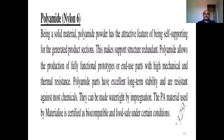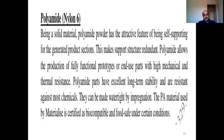The first one is polyamide, also called nylon 6, which basically consists of the amide group in its chemical structure. Polyamide in powder form has the attractive feature of being self-supporting for a generated product. This means support structures are redundant. Polyamide allows the production of fully functional prototypes and end-use parts with high chemical, mechanical, and thermal resistance, especially when using fused deposition modeling or selective laser sintering.